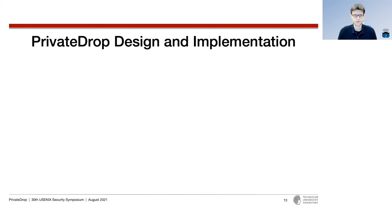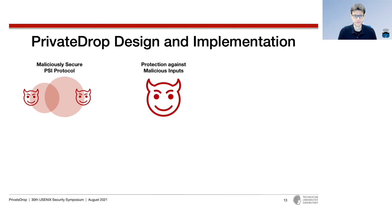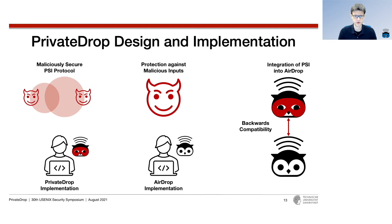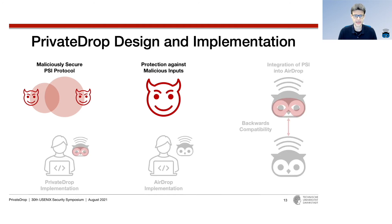When designing and implementing PrivateDrop, we had to overcome a number of challenges. First, we had to choose a PSI protocol that is efficient and secure against malicious users who try to actively cheat on the protocol. Then we had to consider the case that parties lie about their actual inputs, which cannot be prevented even by a maliciously secure PSI. Once these challenges were solved, we also had to tightly integrate PSI into the AirDrop protocol flow while maintaining backwards compatibility to increase chances of adoption by Apple. For our prototype implementations on real iOS and macOS devices, we first had to build a native open source implementation of the original AirDrop protocol as well as our secure PrivateDrop alternative.